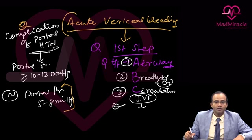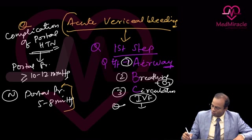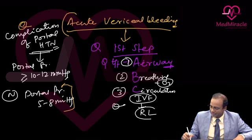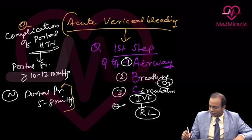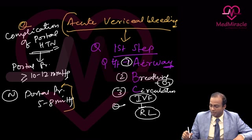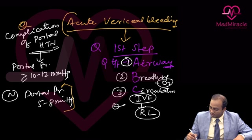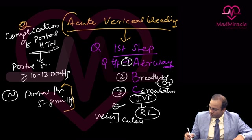The IV fluid of choice in massive bleed is Ringer's lactate. The vein of choice is the cubital vein.